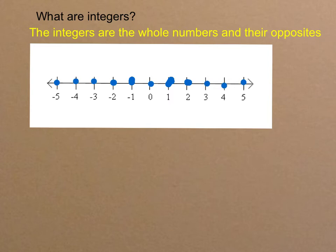5 and negative 5 are both integers. 5 billion and negative 5 billion are both integers.